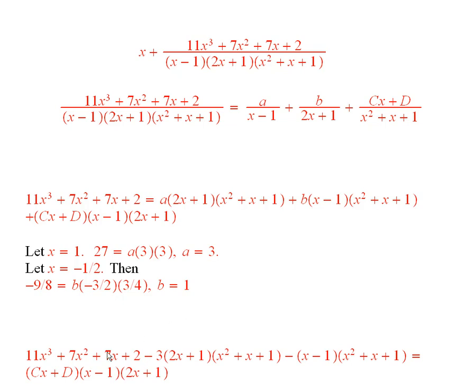So therefore, you can say that this thing here, that's this thing, minus 3 times this. You see the a is 3. Minus 1 times this is then equal to this.